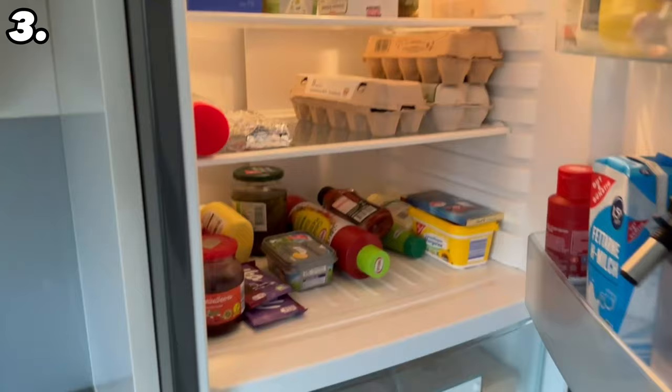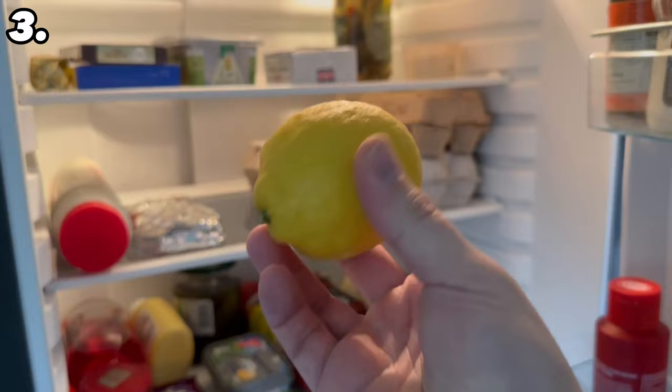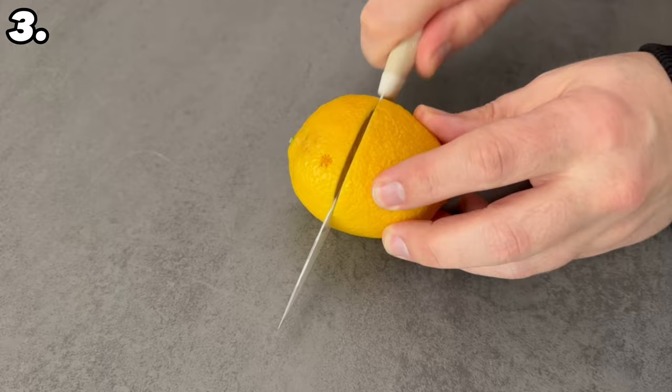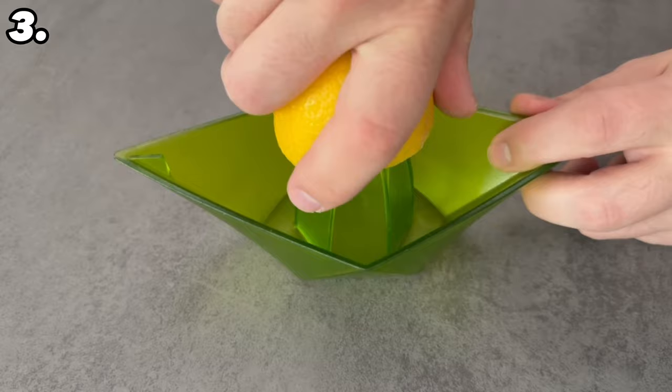For our next secret trick we're also heading to the fridge, because we want to put something very special in it, namely a lemon. But first we need to prepare it a bit. You shouldn't just place it in the fridge as is. What we need from it is the peel. So if you're using a lemon normally and you squeeze it out, then you end up with the peel left over. Instead of throwing this away, you should use it in your fridge.